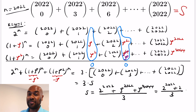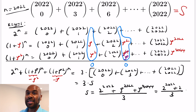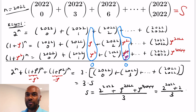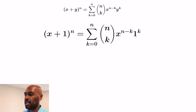A very cool application of plugging values into the binomial expansion. We can do something similar by picking a primitive root of unity — a number where zeta to the k equals 1 — to get the sum of every kth binomial coefficient as well.